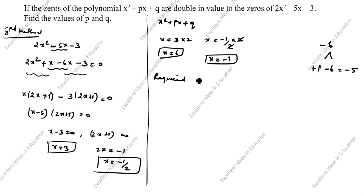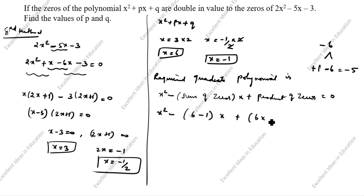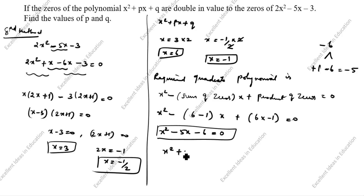The required quadratic polynomial is x squared minus (sum of zeros) x plus (product of zeros) equal to 0. Sum of zeros is 6 plus minus 1 equals 5, product of zeros is 6 into minus 1 equals minus 6. So we get x squared minus 5x minus 6 equals 0, meaning p equals minus 5 and q equals minus 6.